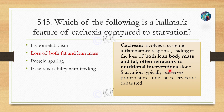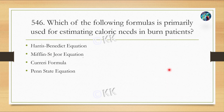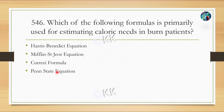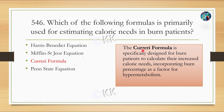Next question: which formula is primarily used for estimating caloric needs in burn patients? Option A: Harris-Benedict equation. Option B: Mifflin-St Jeor equation. Option C: Curreri formula. Option D: Penn State equation. The correct answer is the Curreri formula — it is specifically designed for burn patients to calculate their increased caloric needs, incorporating burn percentage as a factor for hypermetabolism.